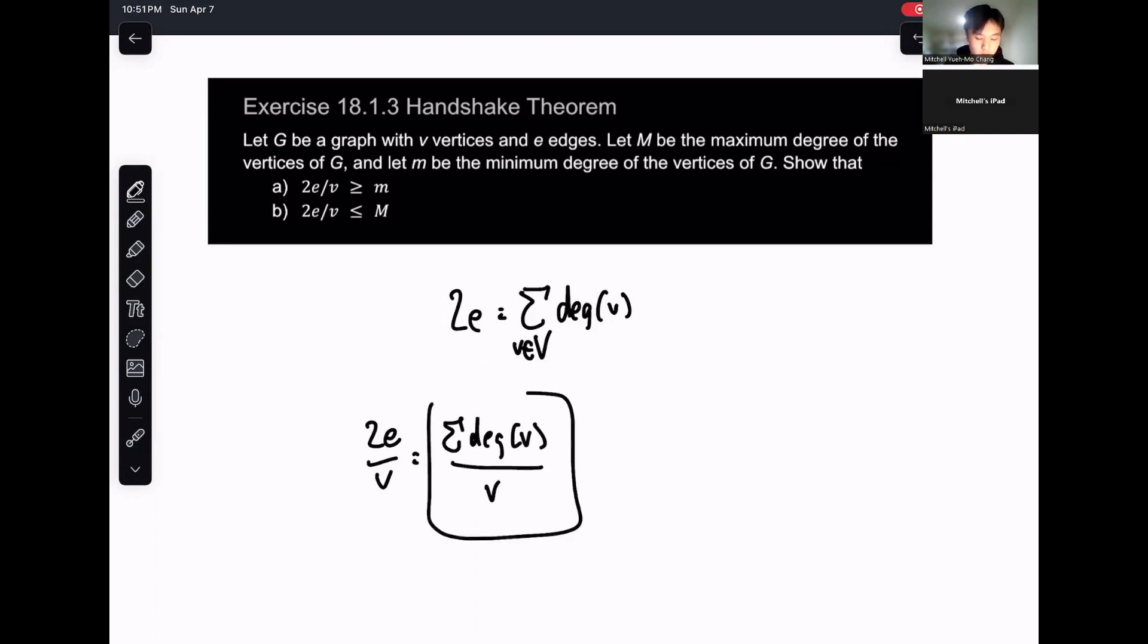So we're taking the total number of degrees and dividing it by V. In other words, this is the average number of degrees per vertex.